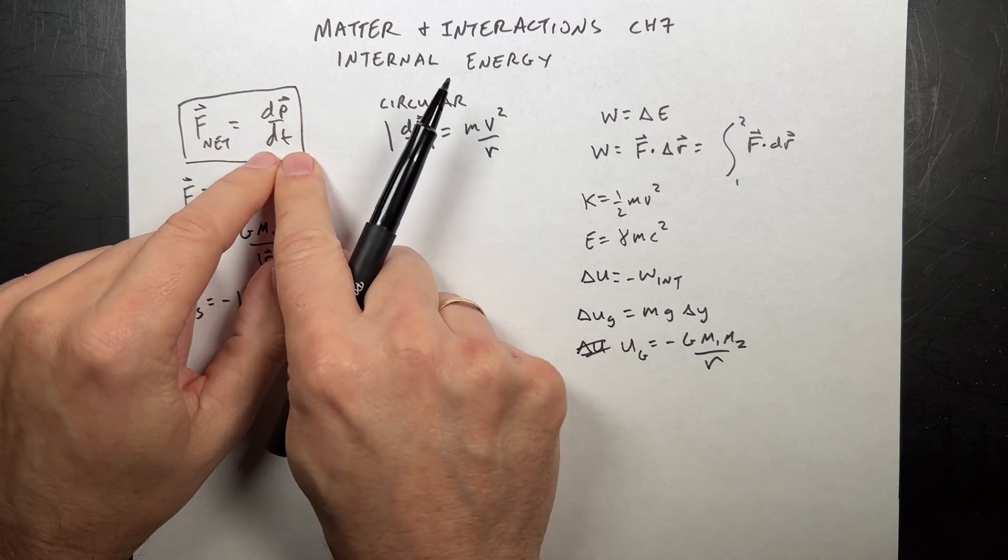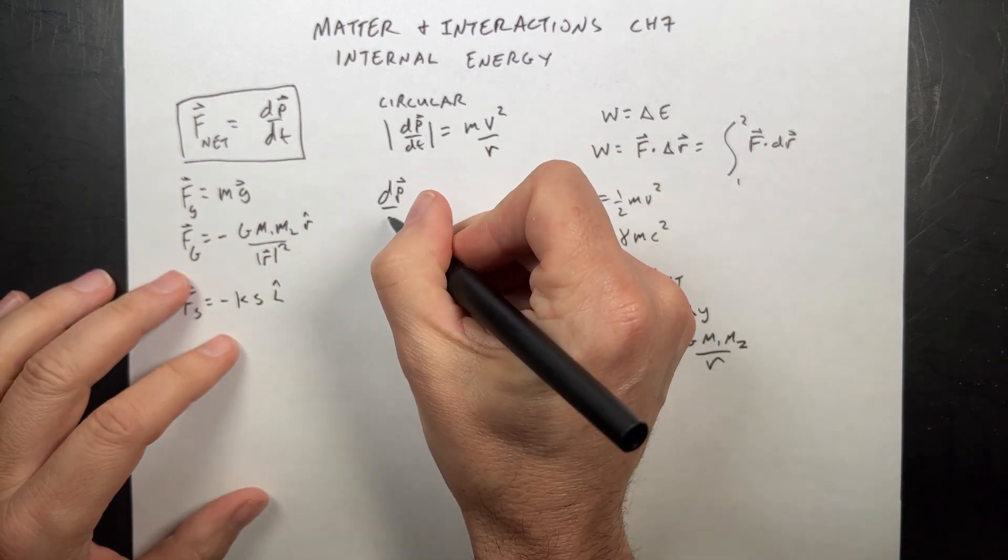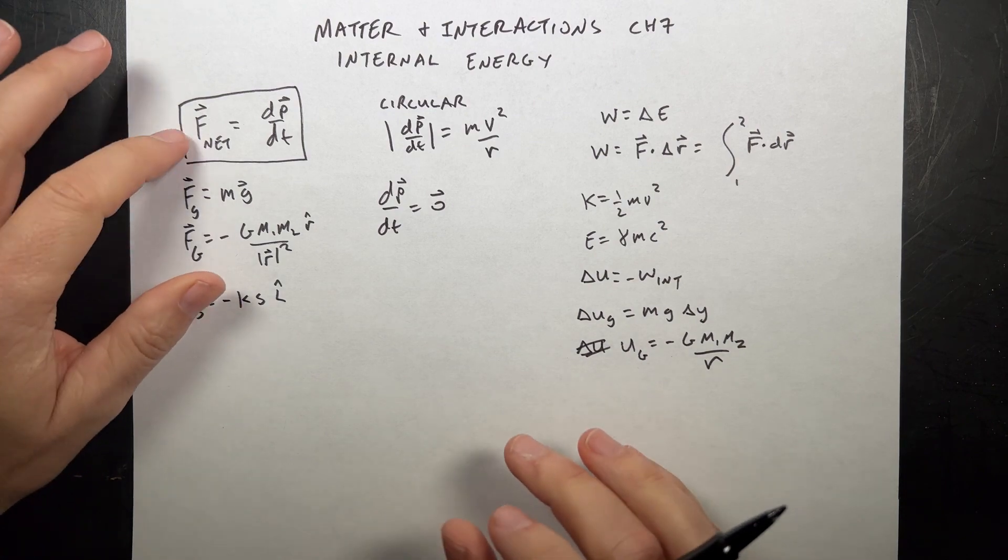One was equilibrium. In equilibrium, dp/dt is zero. The change in momentum is zero, so an object stationary at rest would have dp/dt = 0. Then you can find something about the forces.